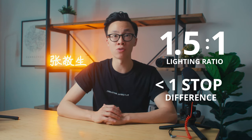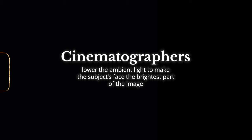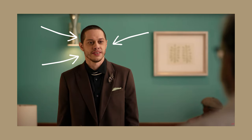A lot of cinematographers use this technique of lowering down the ambient lighting so that the brightest part of the image is the subject's face, and it just makes them pop out a little bit more in the shot. When I'm looking at the false colors, I can see that the values around the subject and the background are pretty uniformly spread throughout the image, which suggests to me that they only used one huge source of light to light up this entire shot.